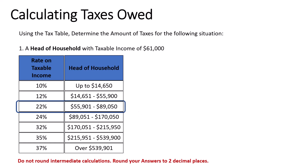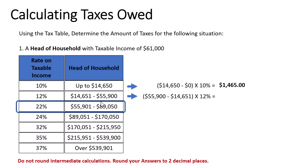When working through these problems, you want to do it in pieces. First, calculate the taxes owed for the 10% bracket: take $14,650, subtract zero (since it's the first bracket and the bottom is zero), multiply by 10%, and we get $1,465. Next, for the 12% bracket: take the upper amount of $55,900, subtract $14,651, multiply by 12%, and we get $4,949.88.